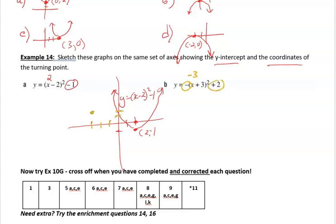And because it's negative in front of those brackets, then it's going to be downward. And that's basically it.